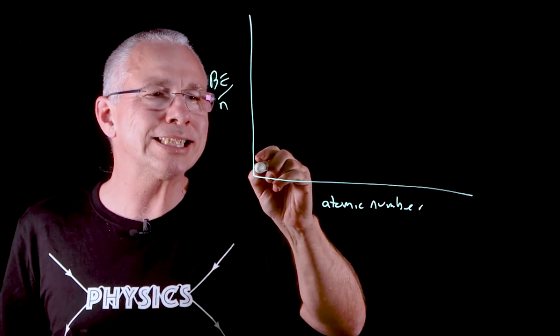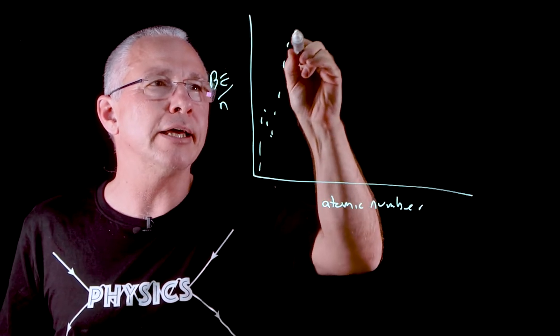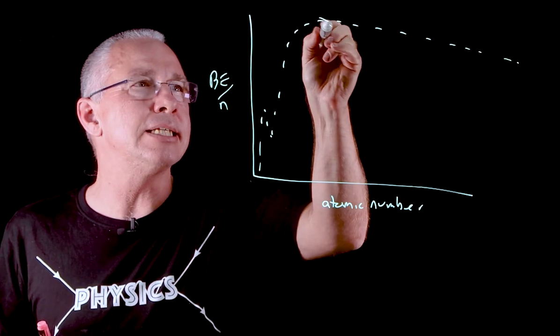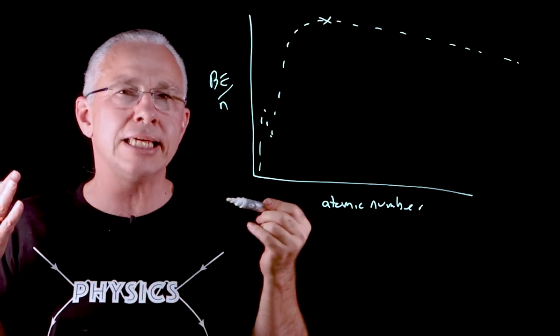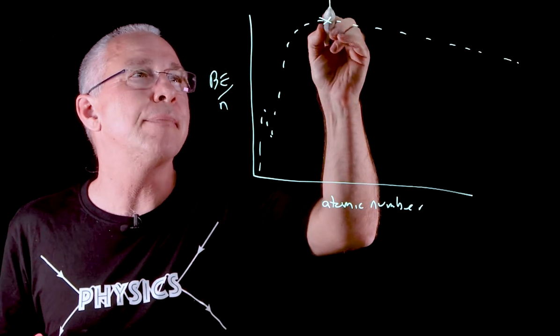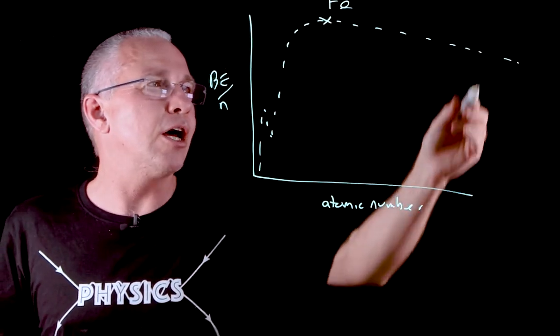The graph looks something a bit like this. What this is saying is that the atom that is existing right here has the highest amount of binding energy per nucleon, and it happens to be iron.